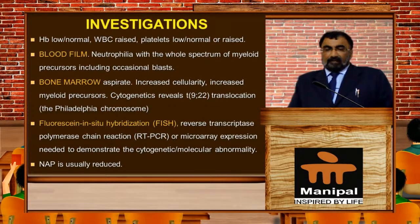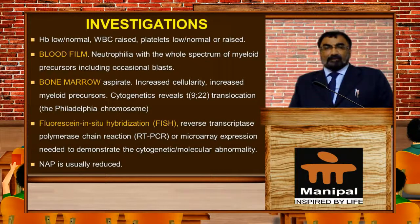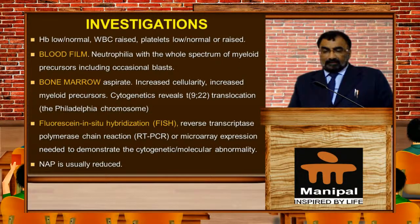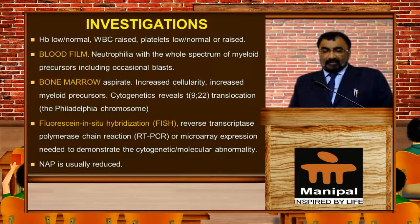Looking at investigations: hemoglobin is low or normal, WBC count is raised, and platelets are low, normal, or raised. On blood film, you see neutrophilia with the whole spectrum of myeloid precursors, including occasional blast cells. Bone marrow aspirate characteristic for CML diagnosis shows increased cellularity and increased myeloid precursors. Cytogenetics reveal the Philadelphia chromosome translocation.